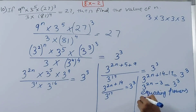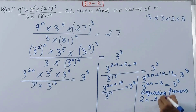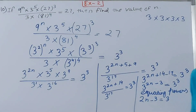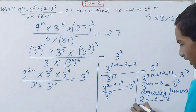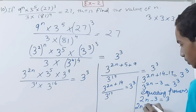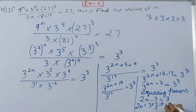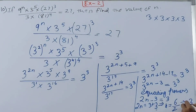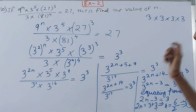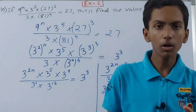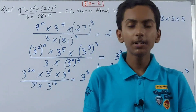Now equating the exponents: 2n minus 3 equals 3. So 2n equals 3 plus 3 equals 6, thus n equals 6 divided by 2, so n equals 3. The value of n is 3 — that is what we have got from solving this exponential equation.